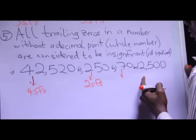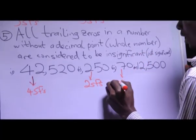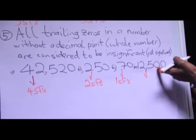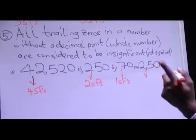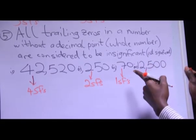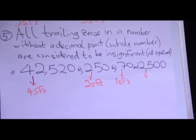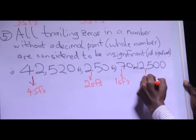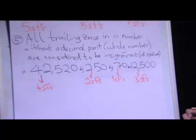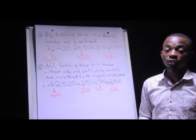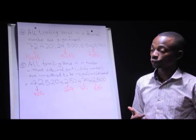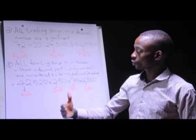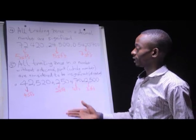For 70, the zero at the end is not significant, so there is only 1 significant figure, which is 7. For 2520, the two trailing zeros are not significant, meaning only 1, 2, and 5 are significant based on condition one — all non-zero digits are significant — giving 3 significant figures. We have now looked at all five conditions for significant figures: conditions 1 through 5, with various examples. Next we will look at practical examples of how to apply these conditions.